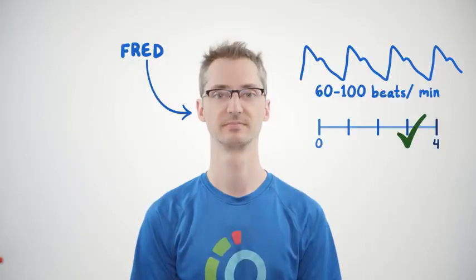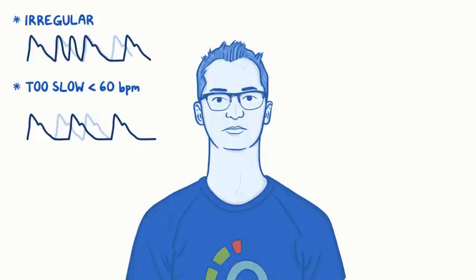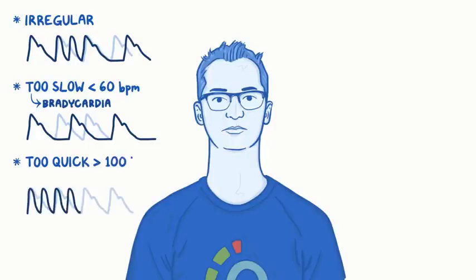But what if Fred's pulse isn't normal? For starters, the rhythm could be irregular, or the pulse could be too slow — fewer than 60 beats per minute — which is called bradycardia. On the other hand, Fred's pulse could be too quick, more than 100 beats per minute, which is called tachycardia.